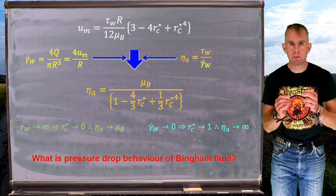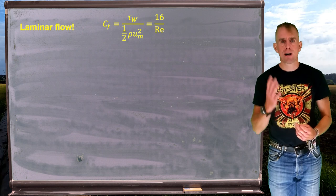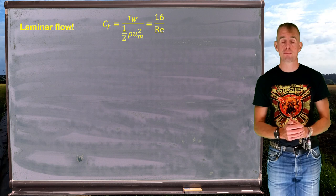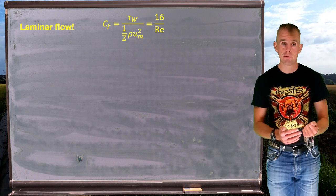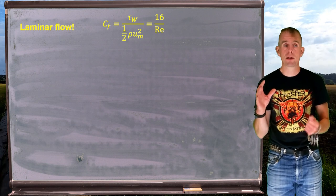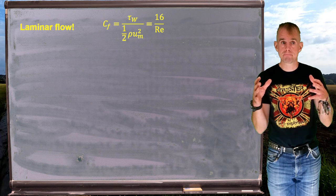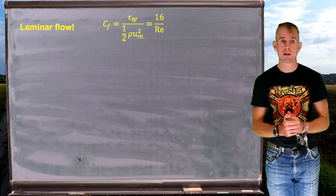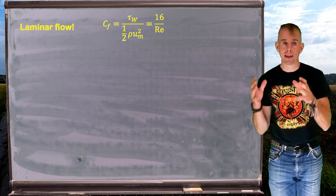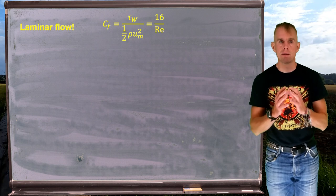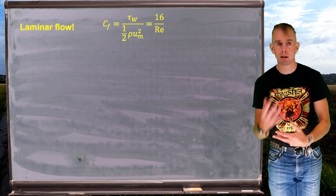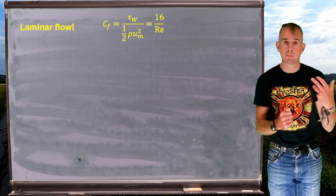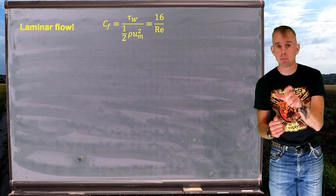So let's examine pressure drop. In laminar flow we have an expression for a friction factor c_f, which is a ratio between the wall shear stress τ_w divided by one-half ρv². In laminar flow, that is 16 divided by the Reynolds number. If we can work out Reynolds number, we can work out friction factor, and then my pressure drop ΔP is 4c_f L/D times one-half ρv².